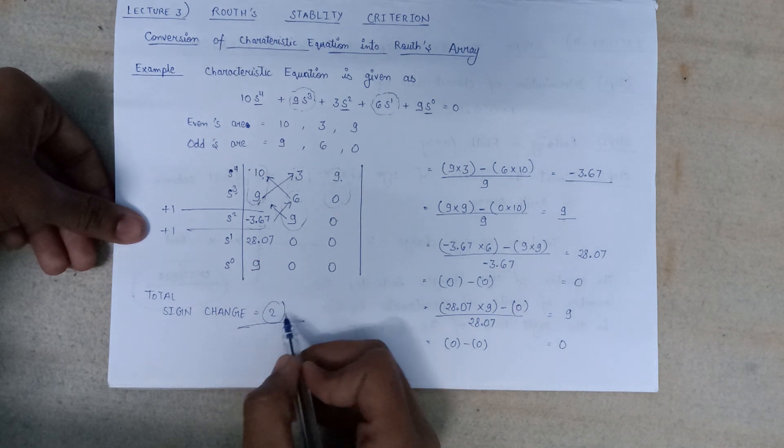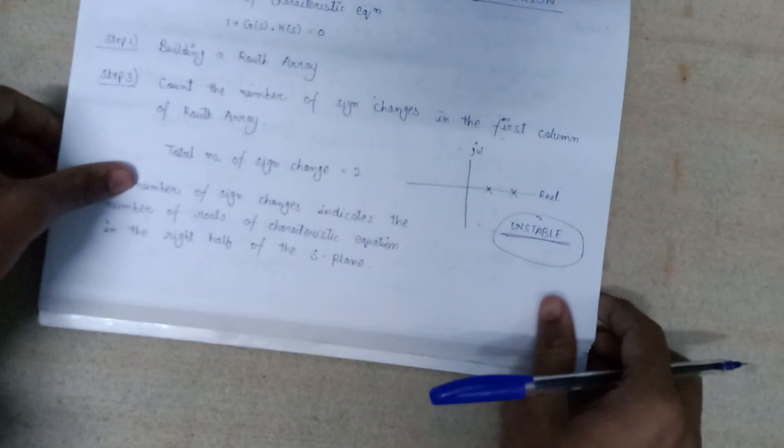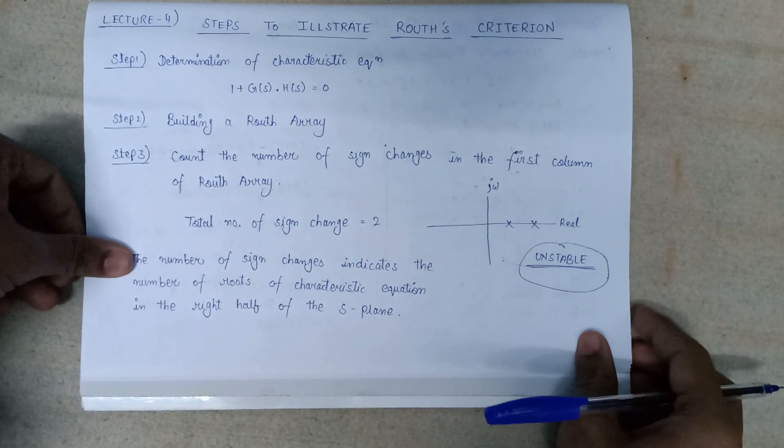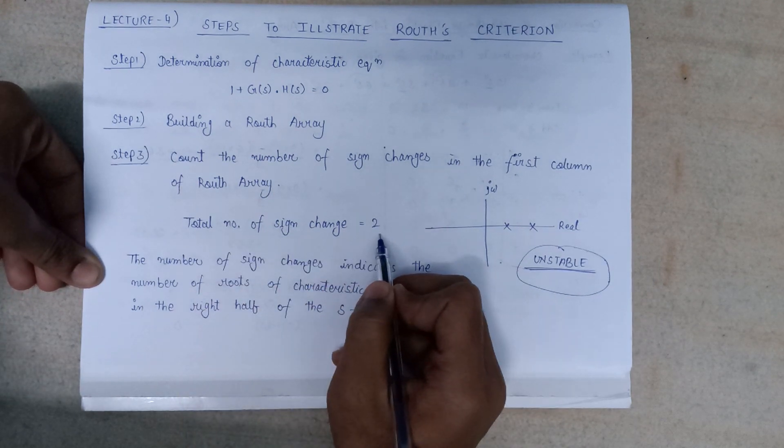So total number of sign changes will be 1 plus 1, that is 2. So in this example, there are 2 changes.